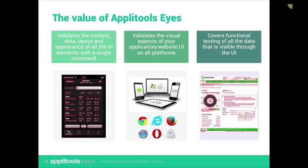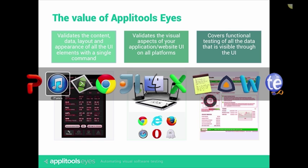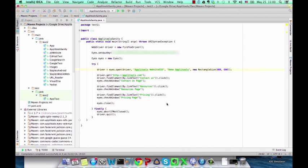Another important point is that ApliTools Eyes seamlessly integrates with existing test automation solutions like Selenium, Appium, HP QTP, HP UFT, Microsoft Coded UI, or any other test automation infrastructure. Let's see an example of building a Java Selenium test — it works in a similar way for all other tools and languages.